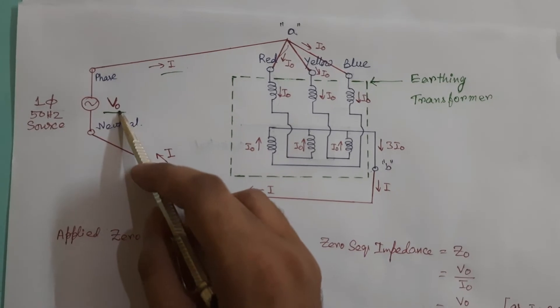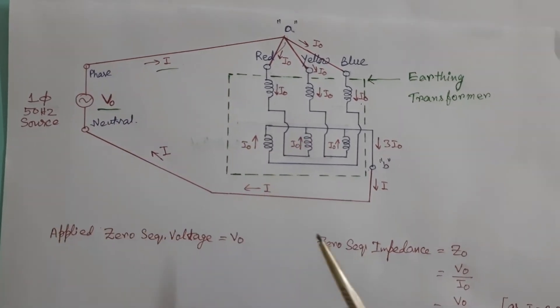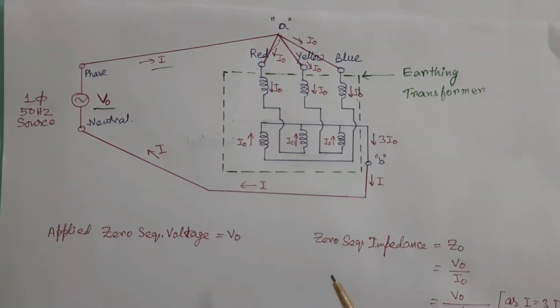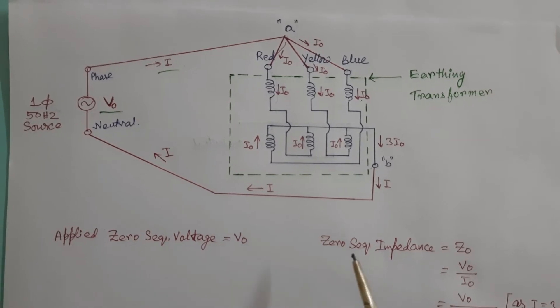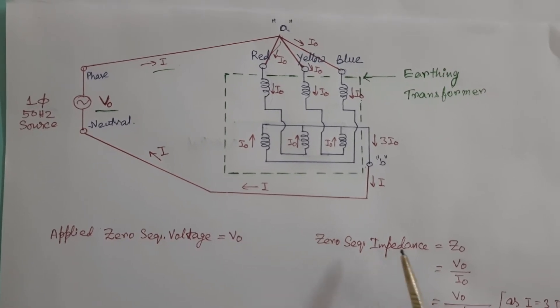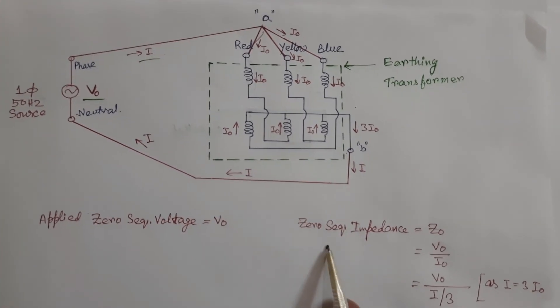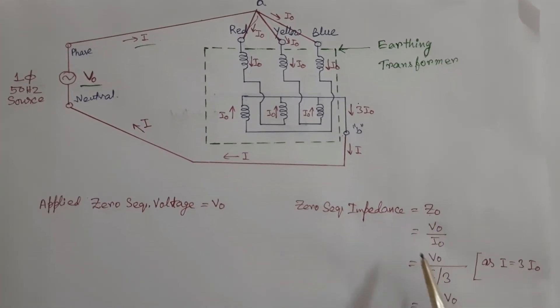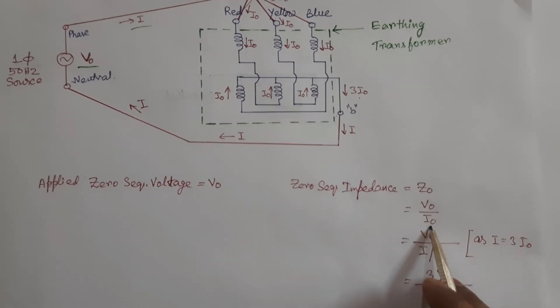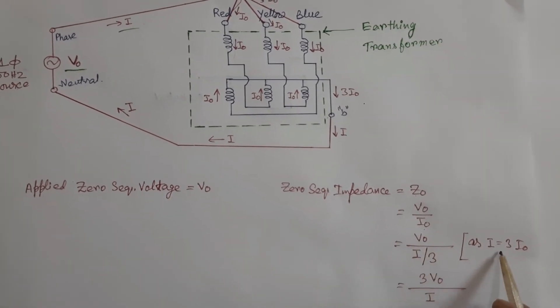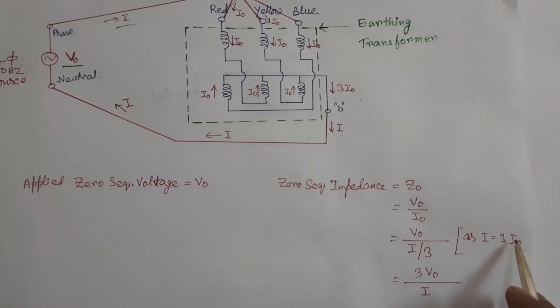The value of V zero and I both are measured and known to us, but our motto is to measure zero sequence impedance of this earthing transformer. Zero sequence impedance Z zero means V zero by I zero and as I equals to three into I zero.